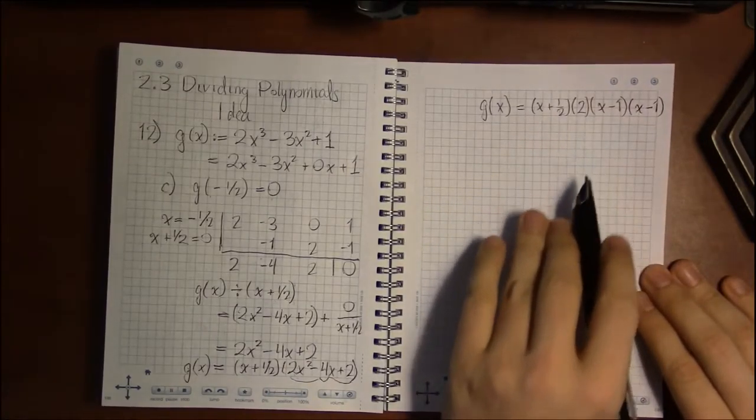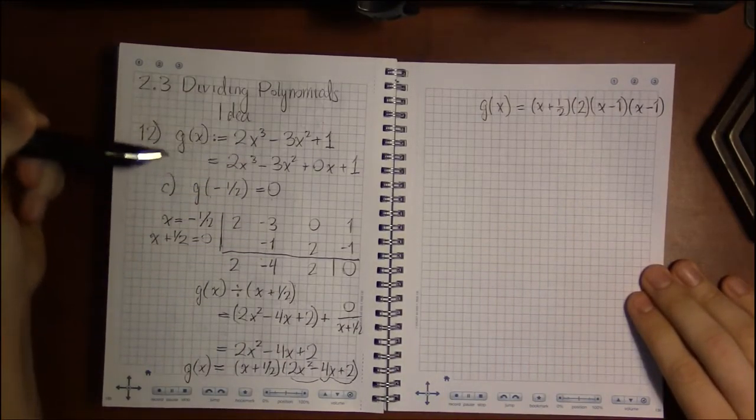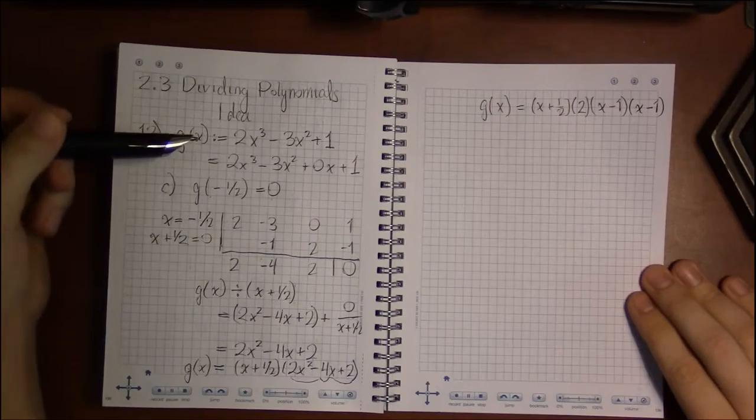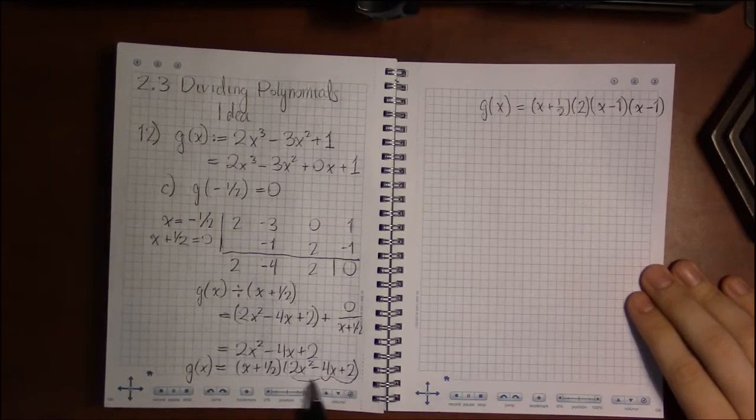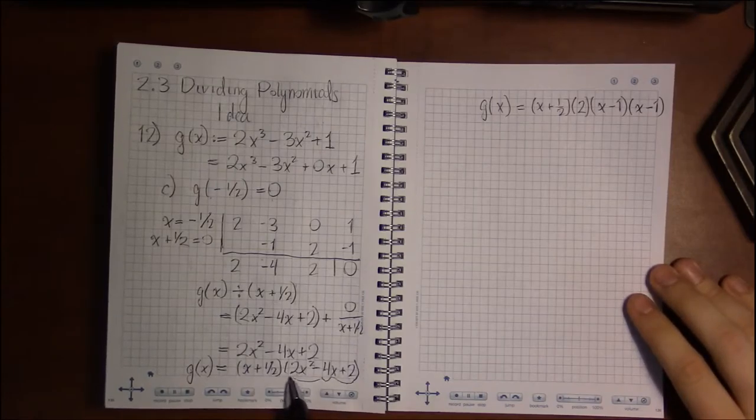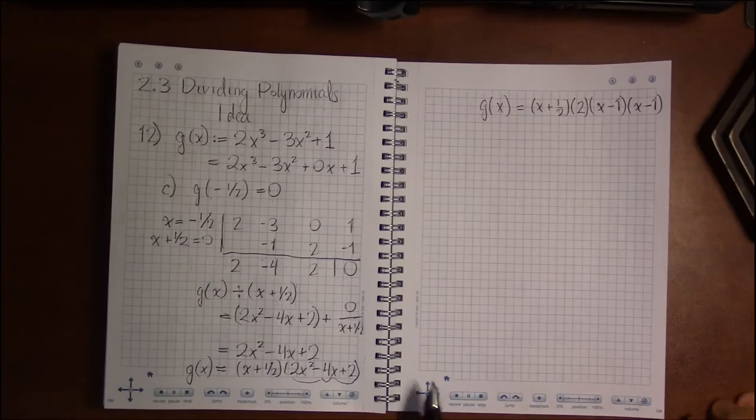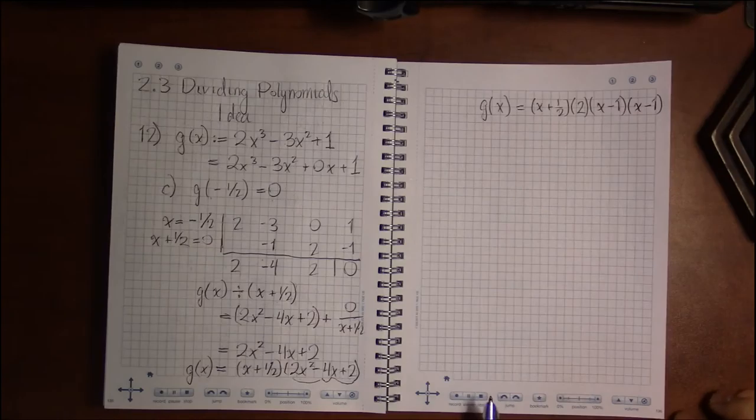This is the important thing about the factor theorem. We're able to pull out 0s from polynomials and get lower and lower degree polynomials, polynomials that are easier and easier to work with. And we'll be using this a great deal. The only thing we need now is something called the rational roots theorem, which is what we're going to get in the next video.